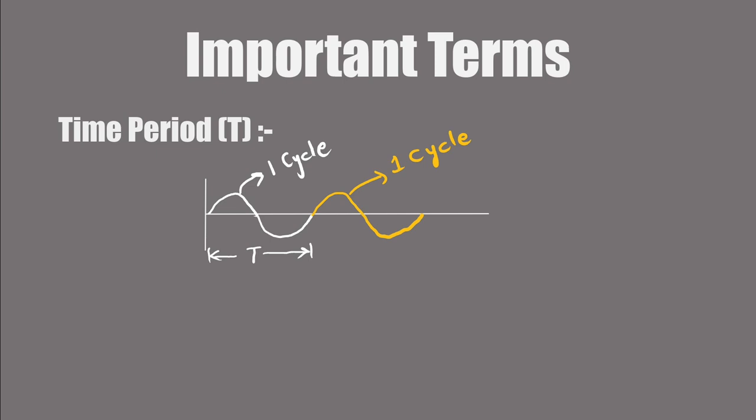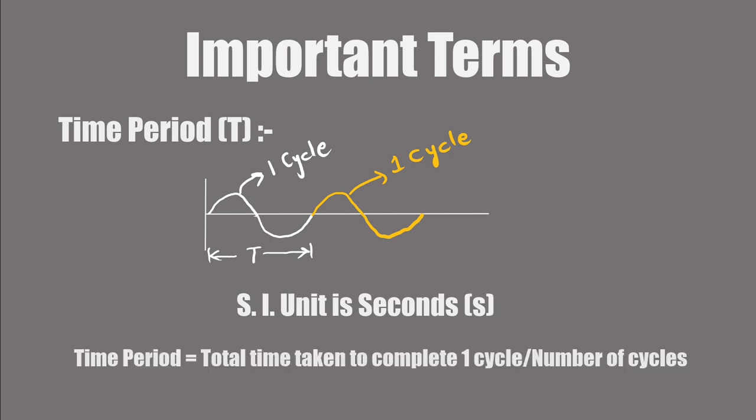The time period is measured in seconds and can be calculated by dividing the total time taken for one complete cycle by the number of cycles.